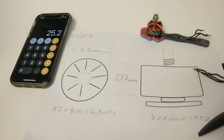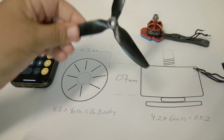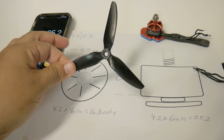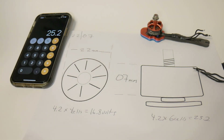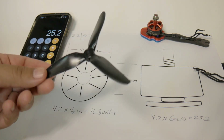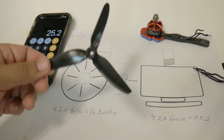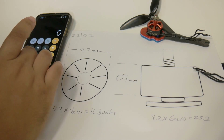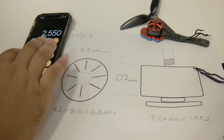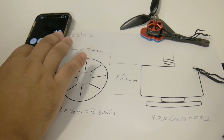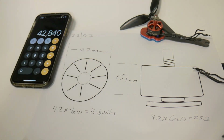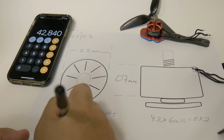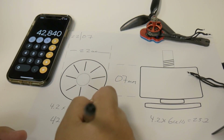Both of these motors would be running a 5-inch prop — whenever you hear a quadcopter referred to as a "5-inch" or "3-inch," it refers to the prop size the motor will be spinning. So let's take the 4S motor at 2550 KV: 2550 × 16.8 volts = 42,840 RPM.